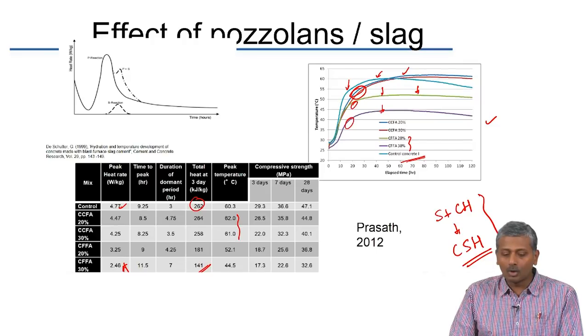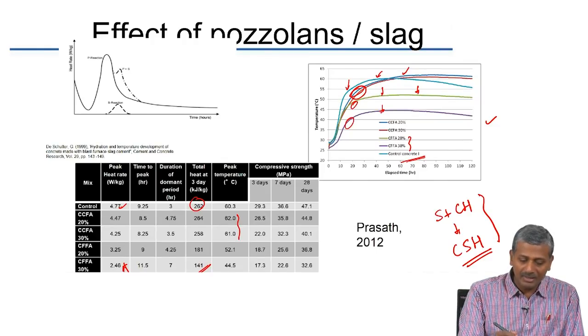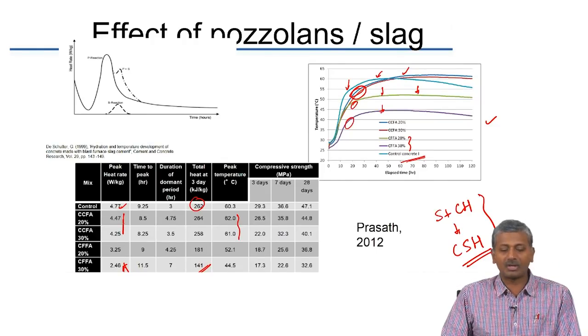Especially in the presence of pozzolanic materials, the study of heat evolution helps analyze the reactivity characteristics of pozzolans. With slag and fly ash, some changes to the heat pattern occur. Primarily with type F fly ash, the peak temperature and peak heat rate are considerably reduced, especially at larger levels of cement replacement. This is not true for type C fly ash, where you may see a delay in achieving the peak heat rate but the overall peak heat rate is not much different from the original cement.